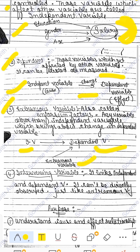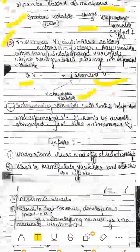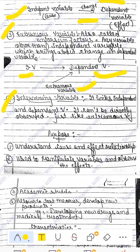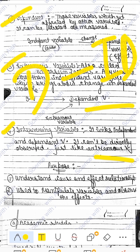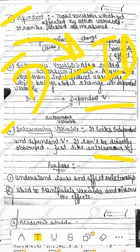The extraneous variable is not inside the actual procedure, but we introduce it as a variable to see how it changes your result. Next comes the intervening variable. The intervening variable is linked to both the dependent and independent variables. It cannot be directly observed, just like the extraneous variable. When we add an intervening variable to our result, we also call it a mediating variable.